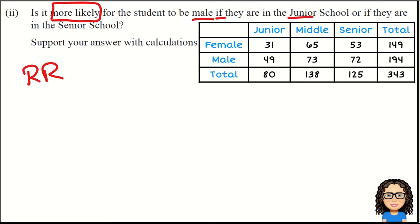It talks about if it's more likely for a student to be male if they are in the junior school or if they are in the senior school. So it's talking about the probability of being male given that they are in the junior school, and we want to compare that with the probability of being male given that they are in the senior school. This is the ratio that we want to form.